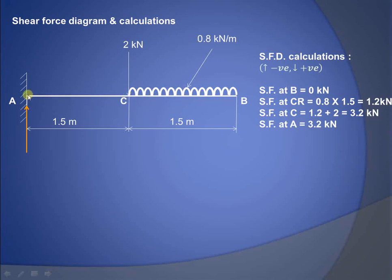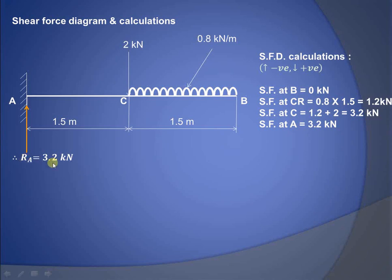From C to A there is no other force acting, so the shear force remains constant. Therefore the shear force at point A is also 3.2 kN, and the reaction RA offered at the fixed end is equal to 3.2 kN.